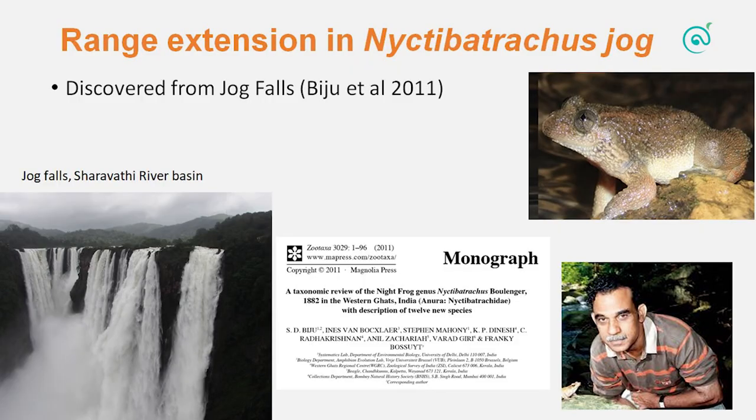The second study I did was range extension in Nyctibatrachus jog. What is range extension? Range extension is when we believe a species is found only at one place, but actually it has a large distribution — and you can find this out using DNA barcoding. Nyctibatrachus jog, as many of you know, was discovered from Jog Falls by Biju et al. This was a really landmark paper because 10 new species had come at this time, one of them being Nyctibatrachus jog. The paper said that it was point endemic — found only in and around Sharavati streams, and not anywhere else. It is stream-dwelling, mostly found in fast-flowing streams.